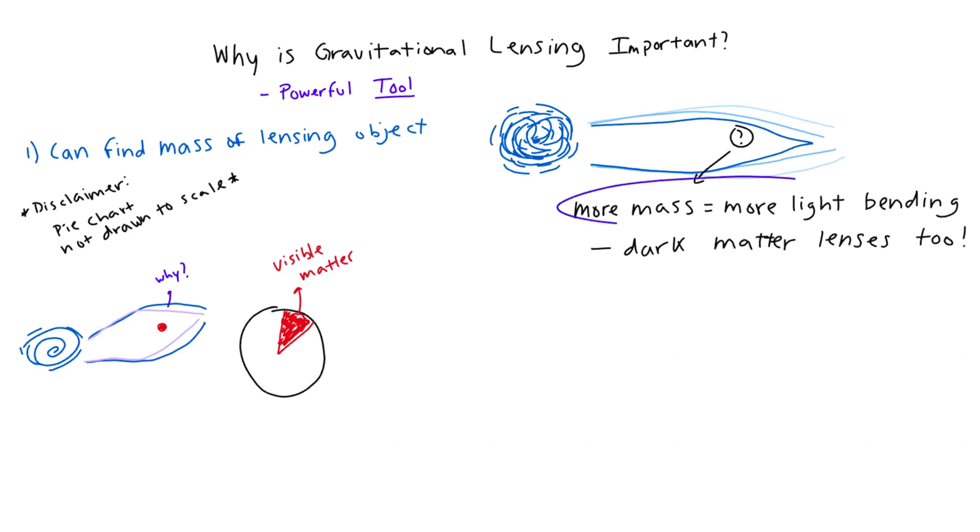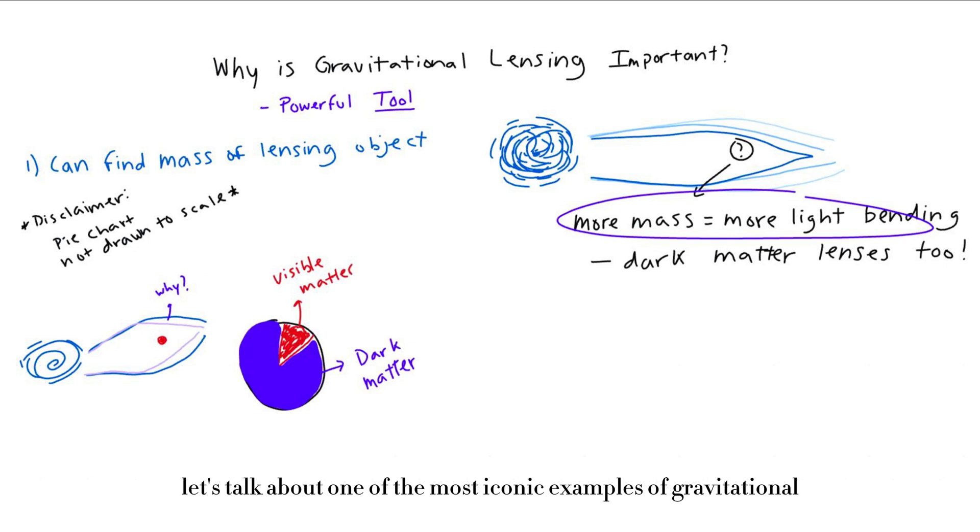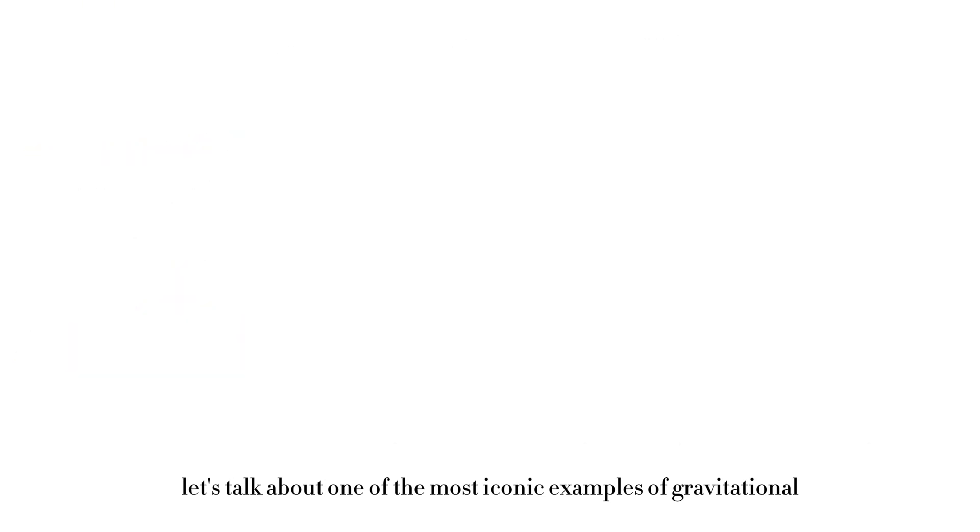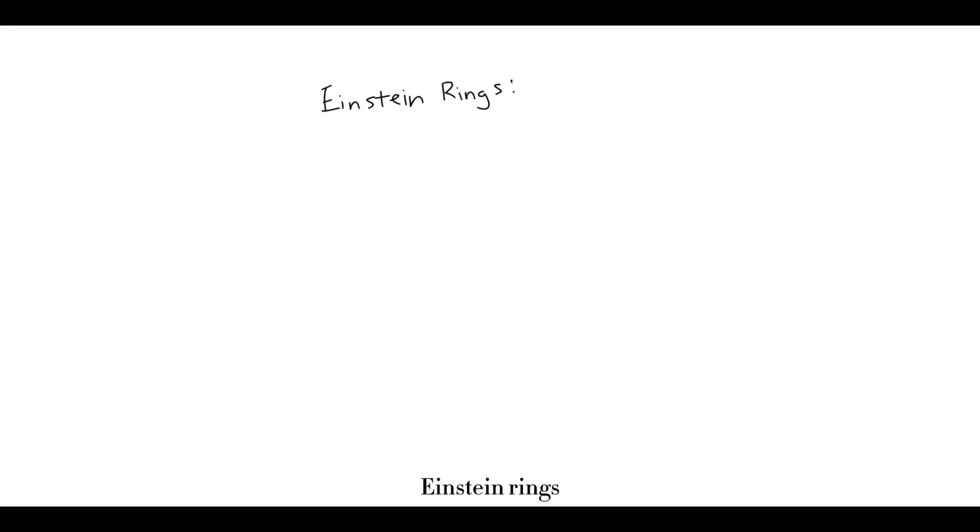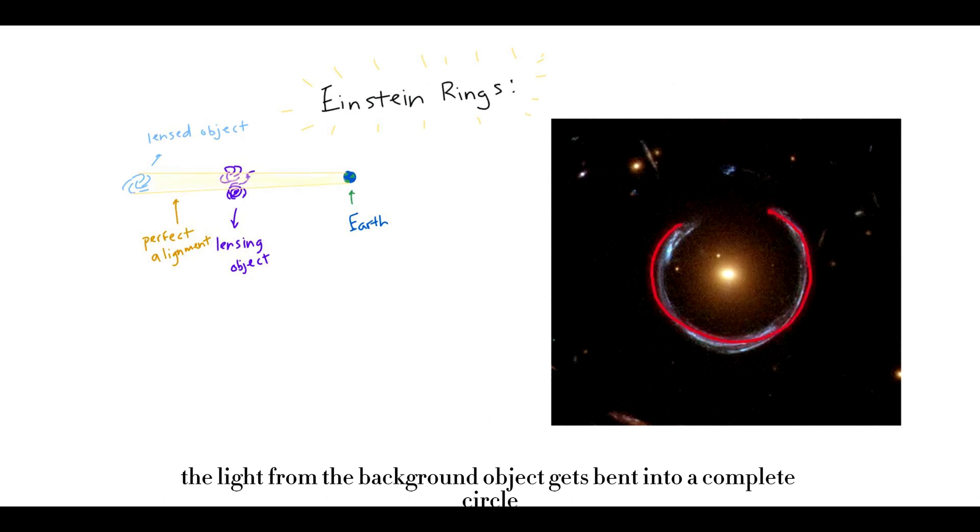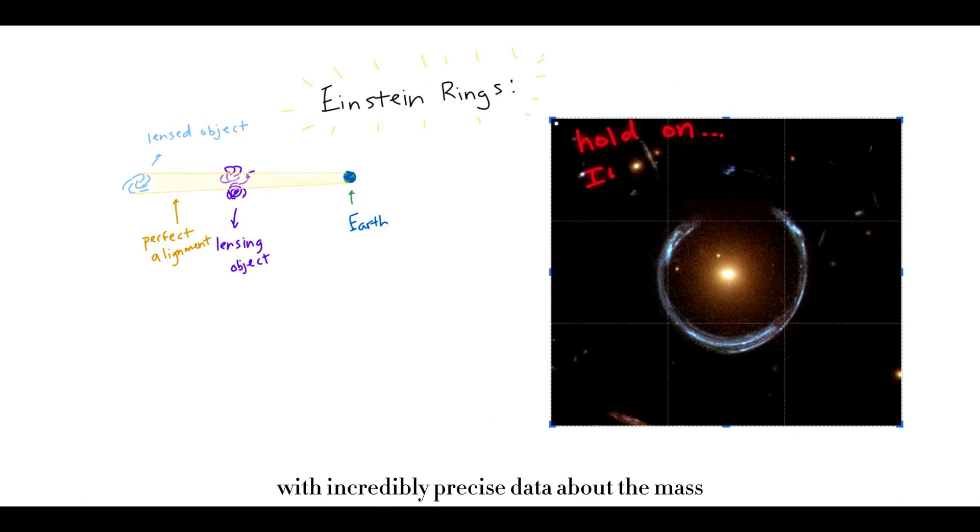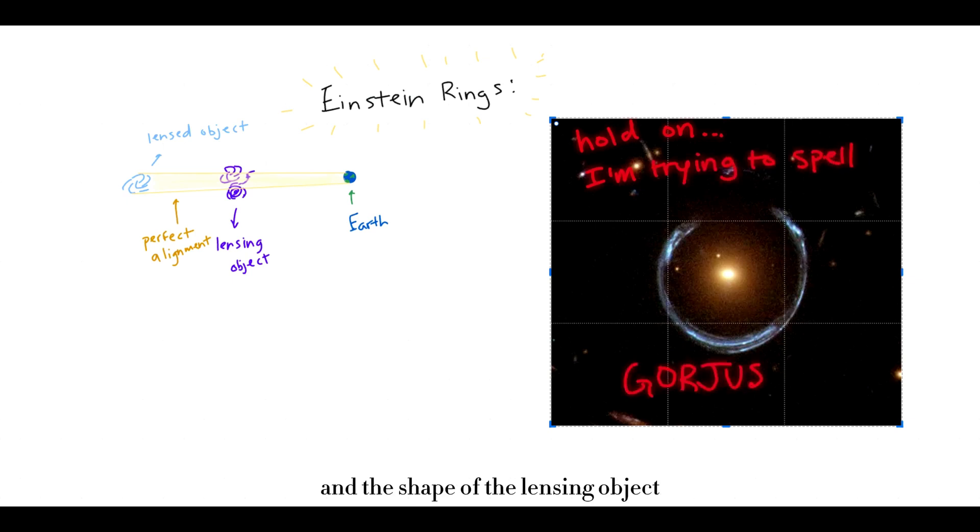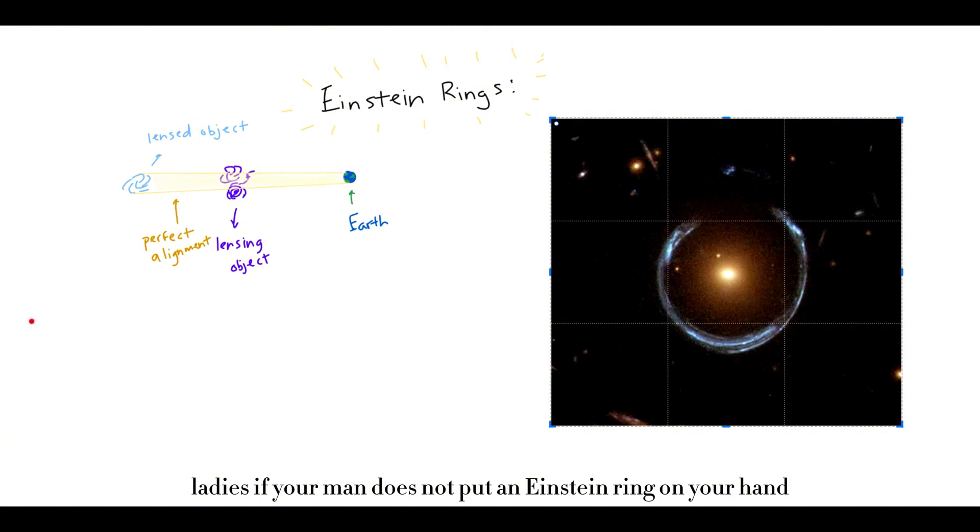Let's talk about one of the most iconic examples of gravitational lensing: Einstein rings. These happen when the lensing object and the background light source are perfectly aligned with Earth and our telescopes. The result: the light from the background object gets bent into a complete circle. They are absolutely stunning. They also provide astronomers with incredibly precise data about the mass and the shape of the lensing object. I mean, come on, look at this guys. Ladies, if your man does not put an Einstein ring on your hand, what are you doing?